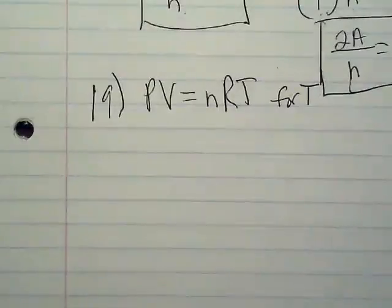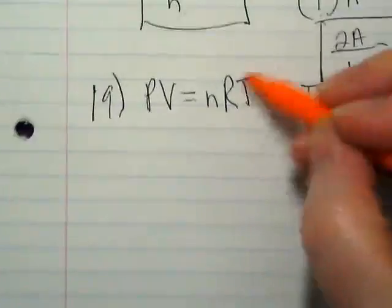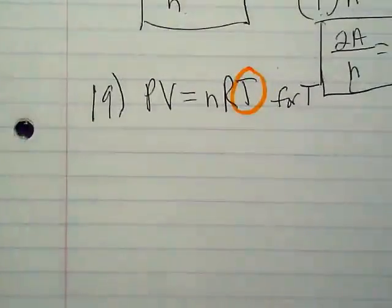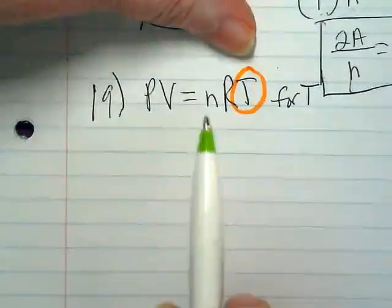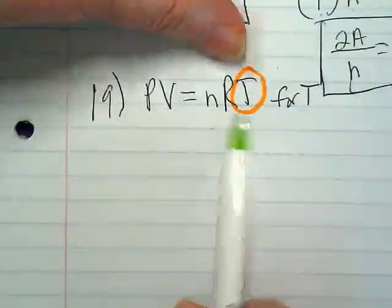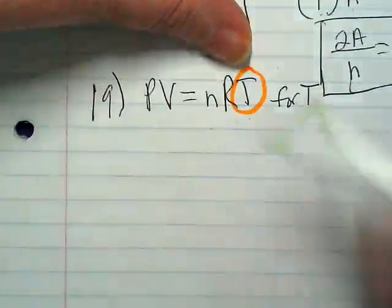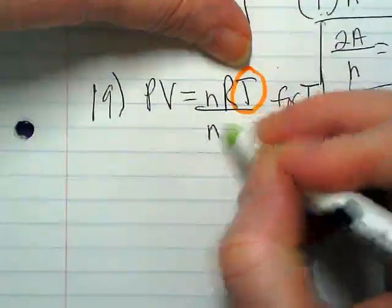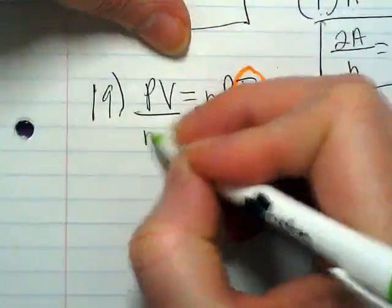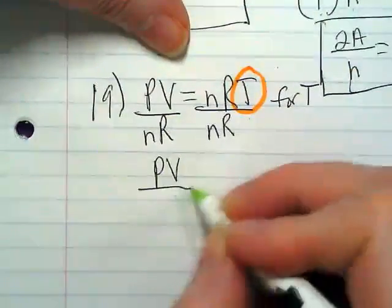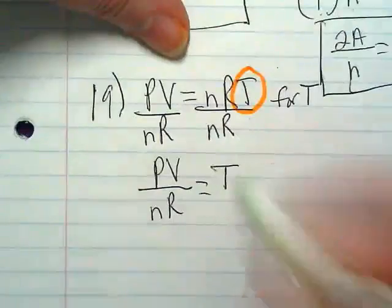I have no idea what this is, but we're going to keep the capitals capital and the lowercase lowercase. What are we solving for? T. I'm visual. I like to keep my eye on that target. That's what I'm trying to get by itself. Right now, what's with it? The end of the R. And how are they with it? Multiply. So to get rid of them, I need to. Divide. And I can do them both together because it's the same action.